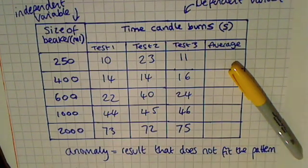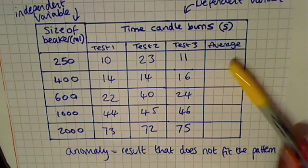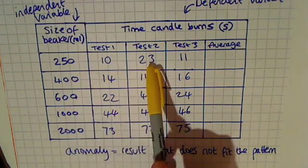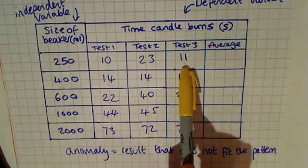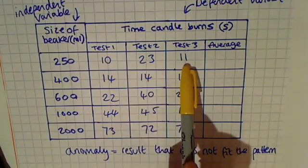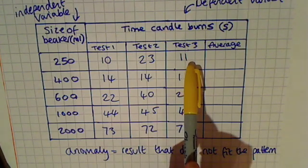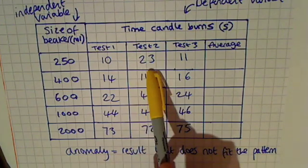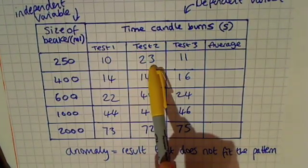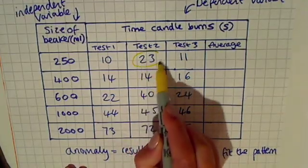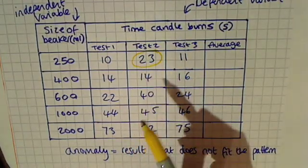For example, in our first row here, we have results of 10 seconds, 23 seconds, and 11 seconds. As you can see, the numbers 10 and 11 are very similar, and this is completely different to the result of 23 that we've got. So I would circle this number 23 as an anomalous result.